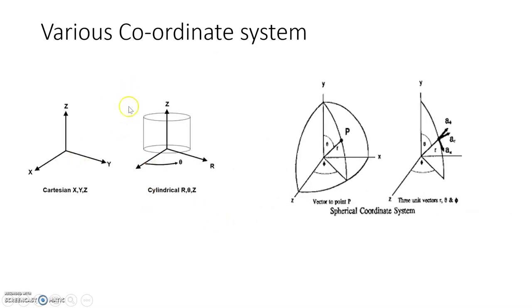Second, we must know the various coordinate systems. In the various coordinate systems, three are very important: first is Cartesian, second is Cylindrical, and third is Spherical.